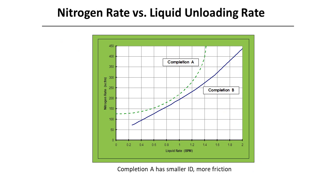This chart shows an example of nitrogen rate and liquid unloading rate with different completion sizes. Completion A has a smaller ID than Completion B, hence Completion A has more friction than Completion B. Completion A has a maximum fluid return rate of around 1.4 barrels per minute, regardless of how much nitrogen is being pumped. This is due to the tighter annular clearance creating more back pressure on the reservoir.